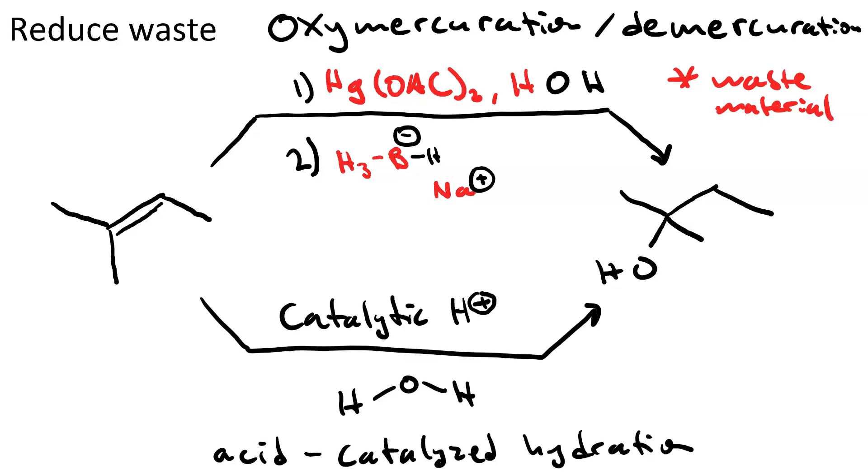If we do acid catalyzed hydration we use a catalytic amount of H plus and water. The only waste material is the catalytic amount of the proton, but it's a super small amount. Also no toxic byproducts. So oxymercuration demercuration has poor atom economy. Acid catalyzed hydration on the other hand has good atom economy.